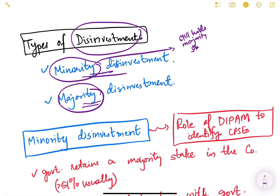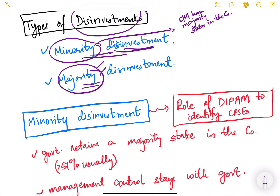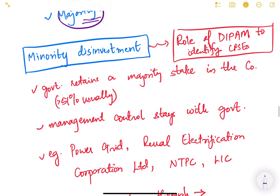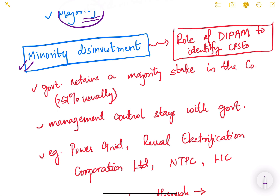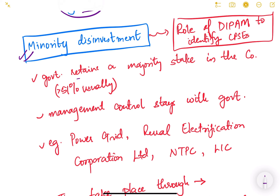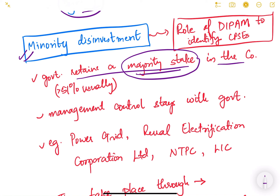Now let us look at what are the types of disinvestments. The first one is minority disinvestment and the second one is majority disinvestment. In minority disinvestment, the government sells its minority share, meaning it still holds the majority stake in the company. In majority disinvestment, the majority is sold and either a minority is retained or 100% is sold.